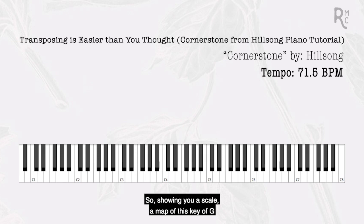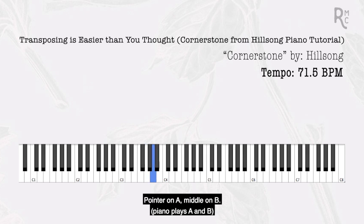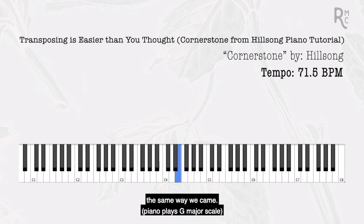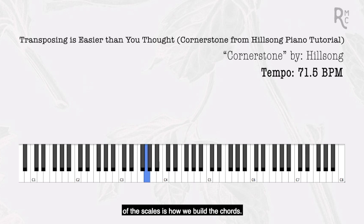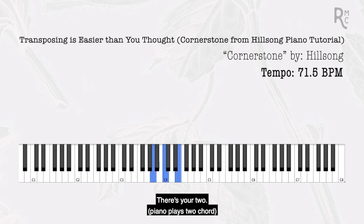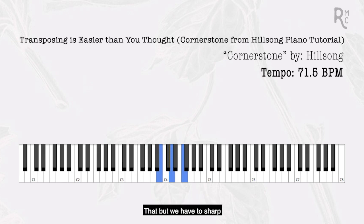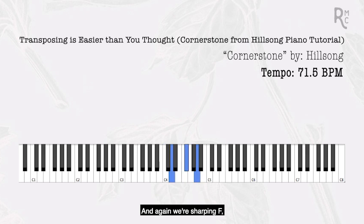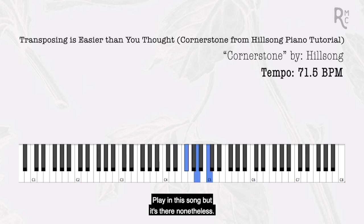Every F we play in the key of G has to be F sharp — we can't play natural F. The G major scale looks like this: G with your thumb, A with your pointer, B with your middle finger, thumb under for C, pointer on D, middle finger on E, fourth finger on F sharp, and pinky on G. From there, we get our chords — remembering that first, third, and fifth notes build each chord, and every F must be sharped. That gives us chords one through seven in the key of G.